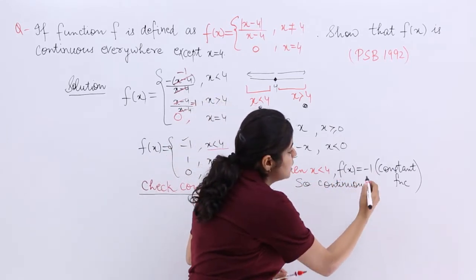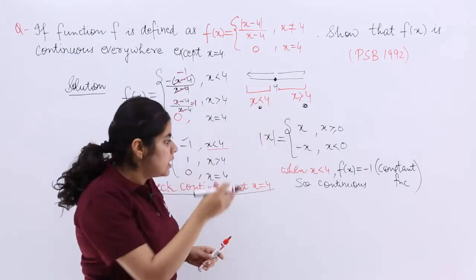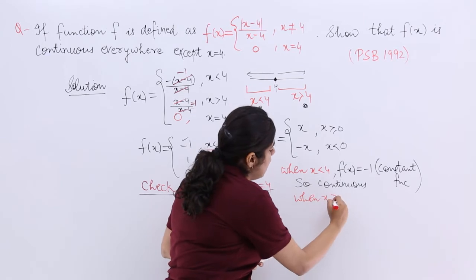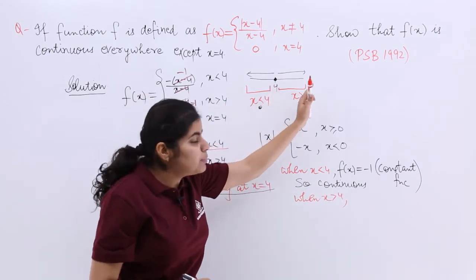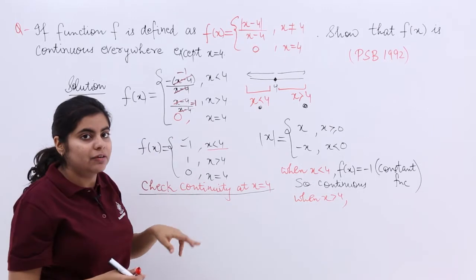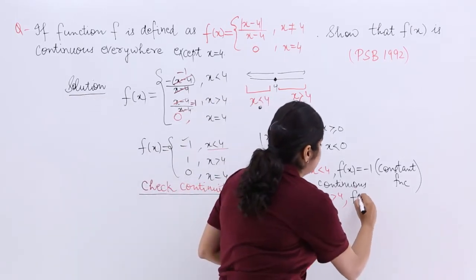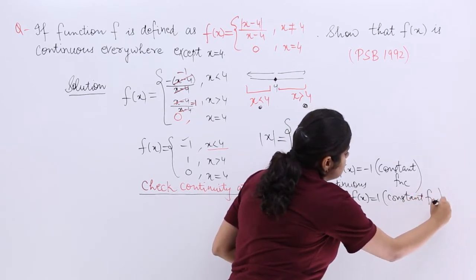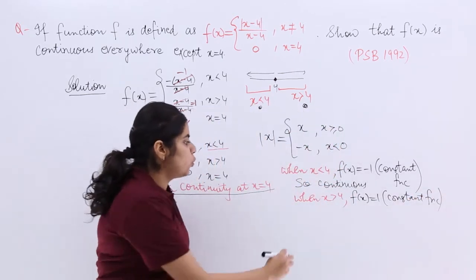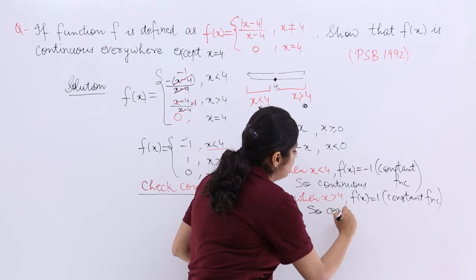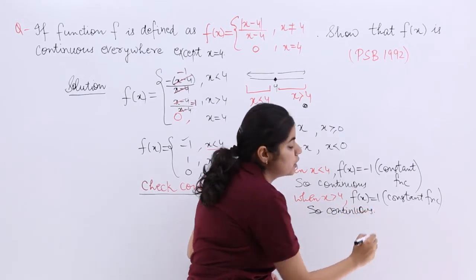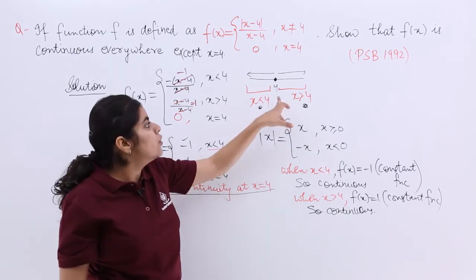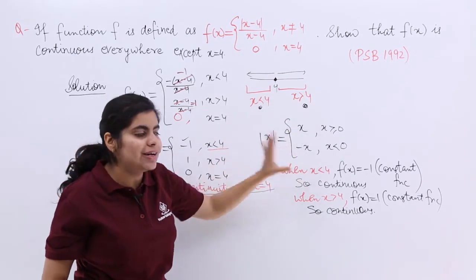When x is greater than 4, f(x) equals 1, which is again a constant function, and therefore continuous. So for all values other than x equal to 4, the function is continuous. The only test condition is at x equal to 4.